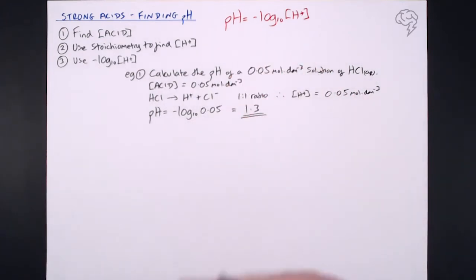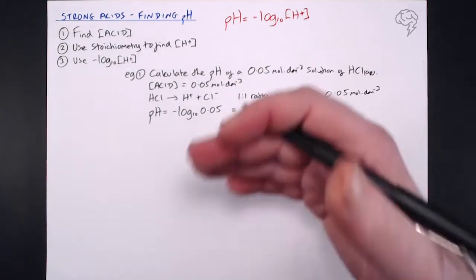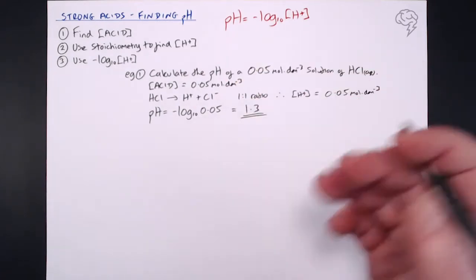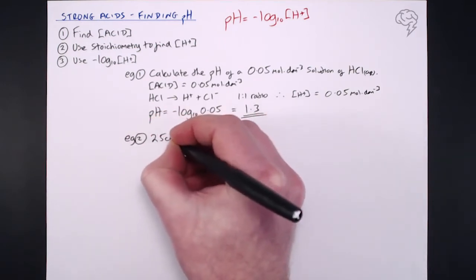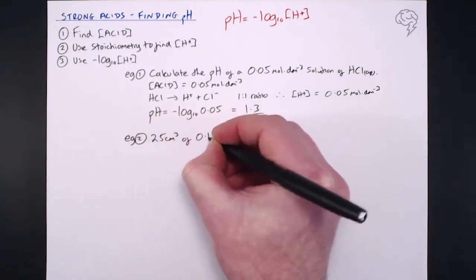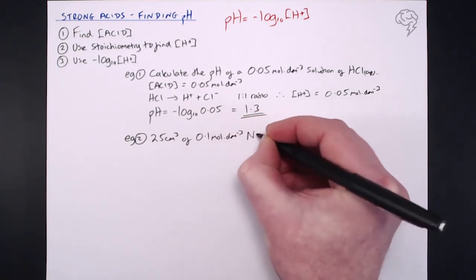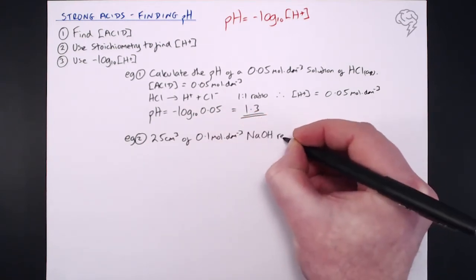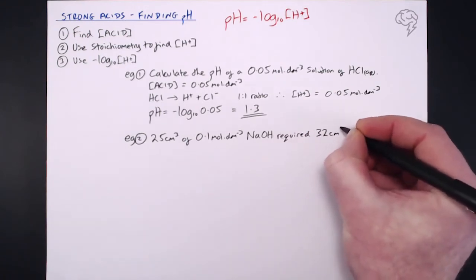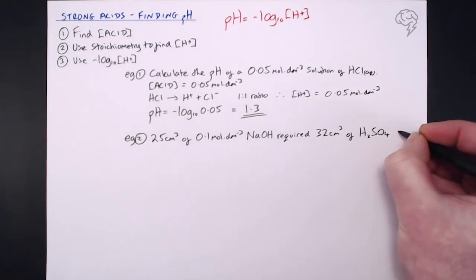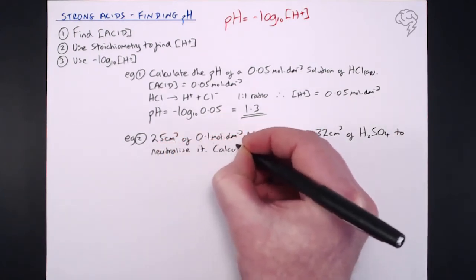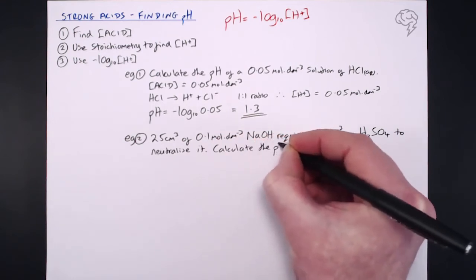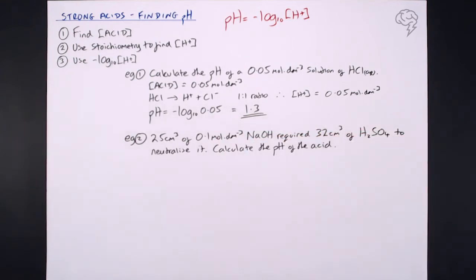Sometimes the questions might be a bit more involved and you need to do a little bit of extra legwork — but of course they'll give you more marks for it. Let's look at a second example: 25 cm³ of a 0.1 mol dm⁻³ sodium hydroxide solution required 32 cm³ of sulfuric acid to neutralize it. Calculate the pH of the acid.